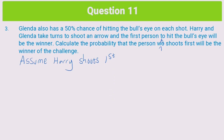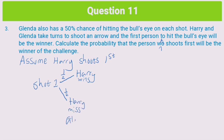If Harry shoots first, on shot one there are two possibilities: either Harry hits the target and wins the game — with a probability of a half — or Harry misses, also with a probability of half, giving Glenda a chance to win. So Harry misses, and then Glenda will shoot. We have the probability of Glenda missing, thereby giving Harry another chance to win.